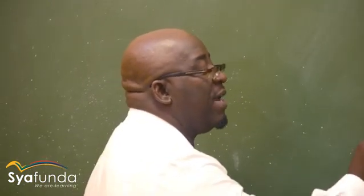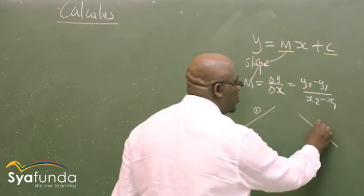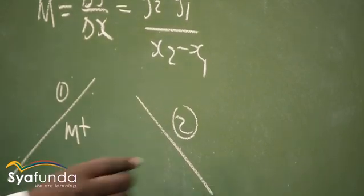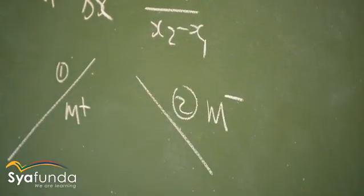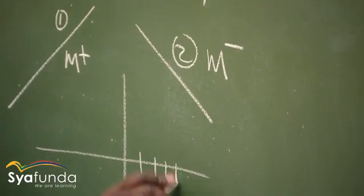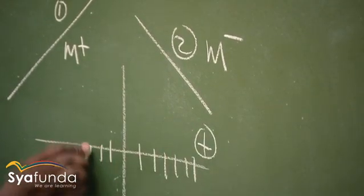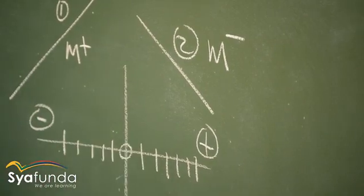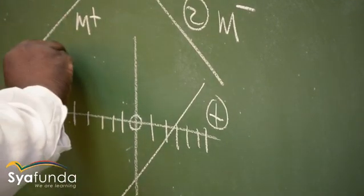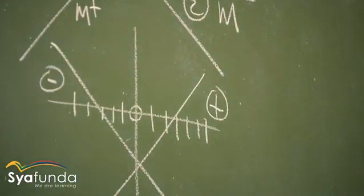It is important to know that the sign of the gradient depends on direction. If the line slopes like position 1, the gradient is positive. If it slopes like position 2, the gradient is negative. A useful way to remember: if you're drawing from the positive x-axis side, the gradient is positive; from the negative side, it is negative.